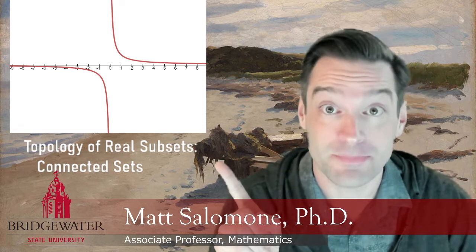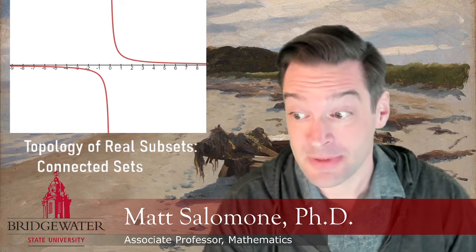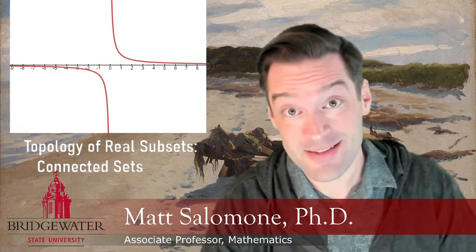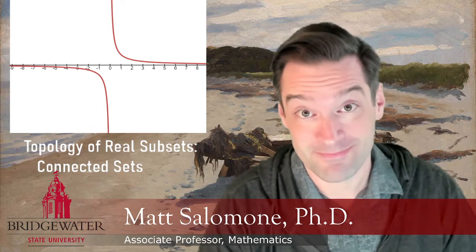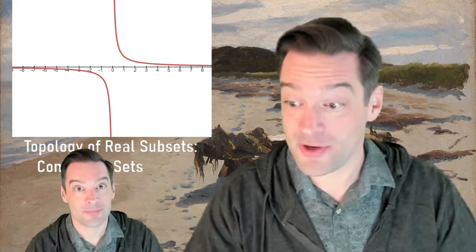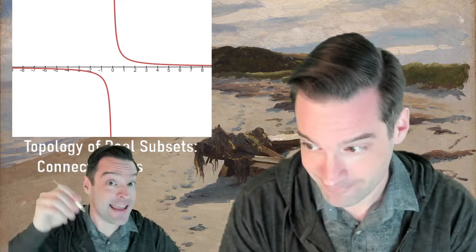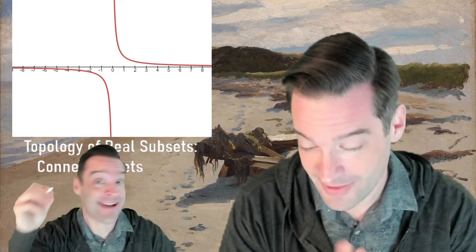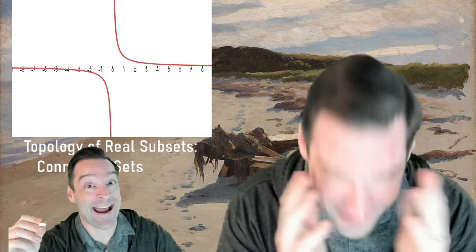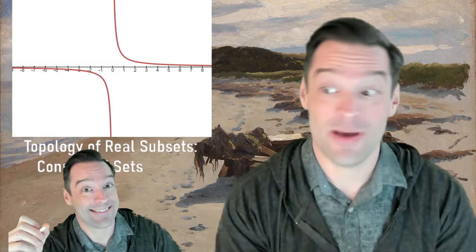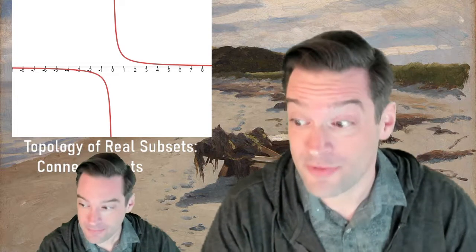And the controversy is about this function, f of x equals one over x. And my question is, is this a continuous function? And we all know what the calculus enjoyer says about it. That's not continuous because if I draw the graph, I have to lift my pencil.